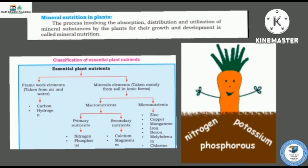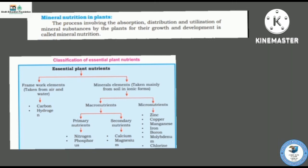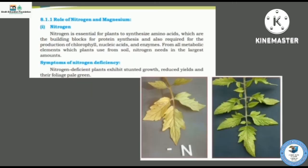There are two types of nutrients: macro and micro. Macronutrients are more important, including nitrogen. Nitrogen is an essential element for the synthesis of amino acids, chlorophyll, and proteins.